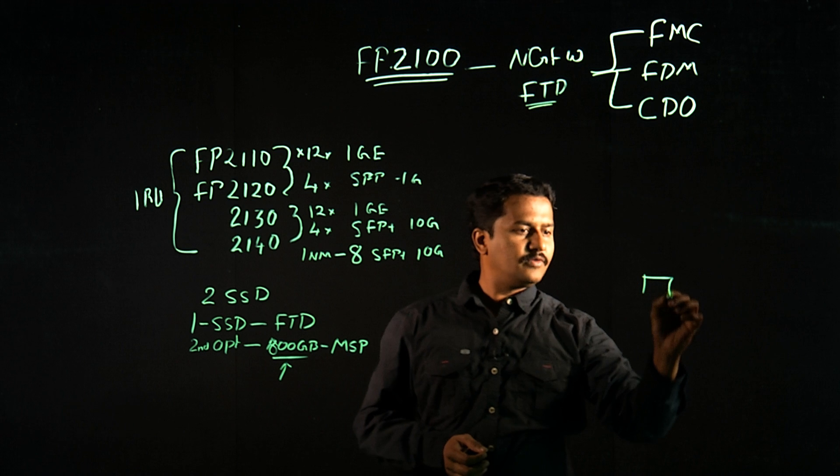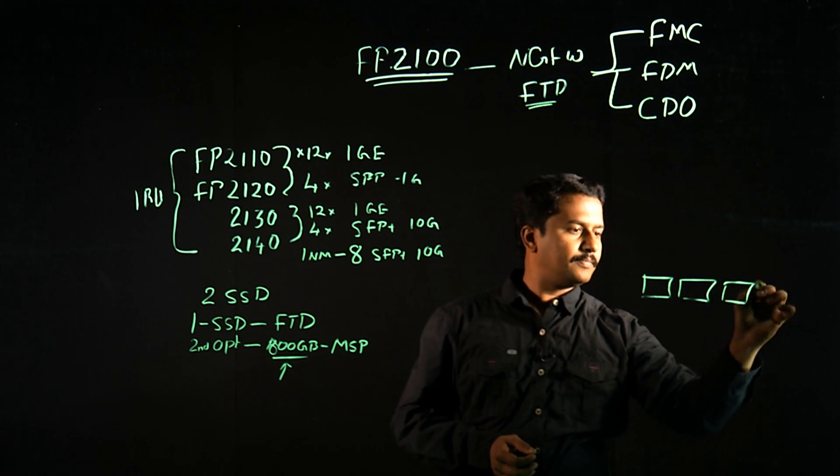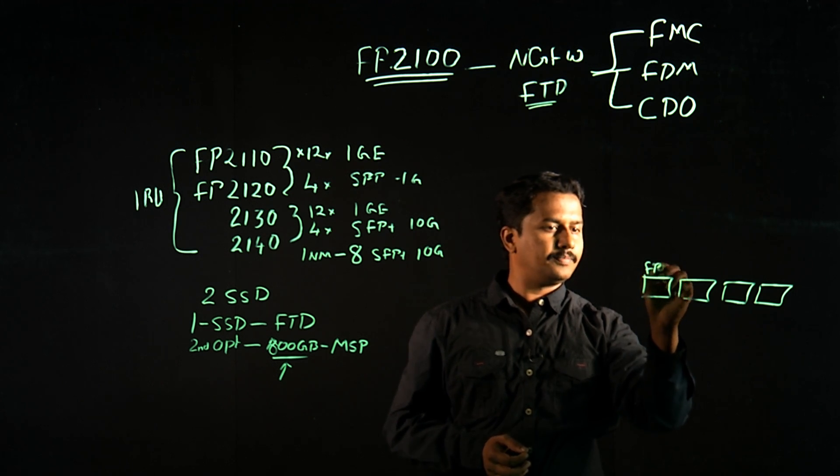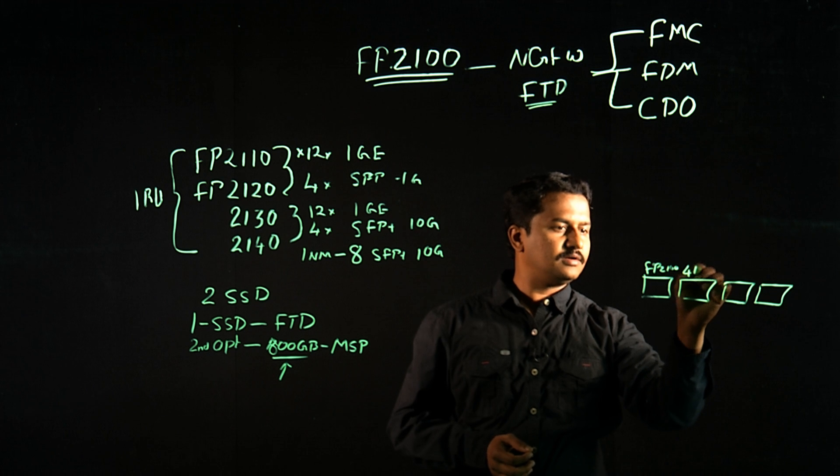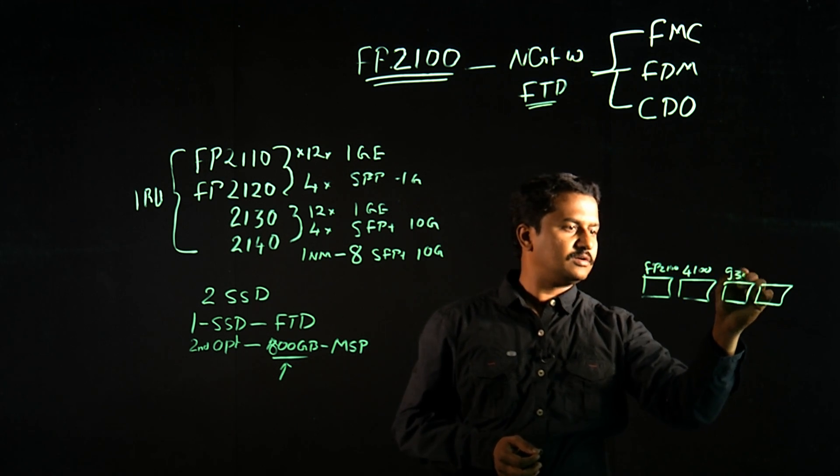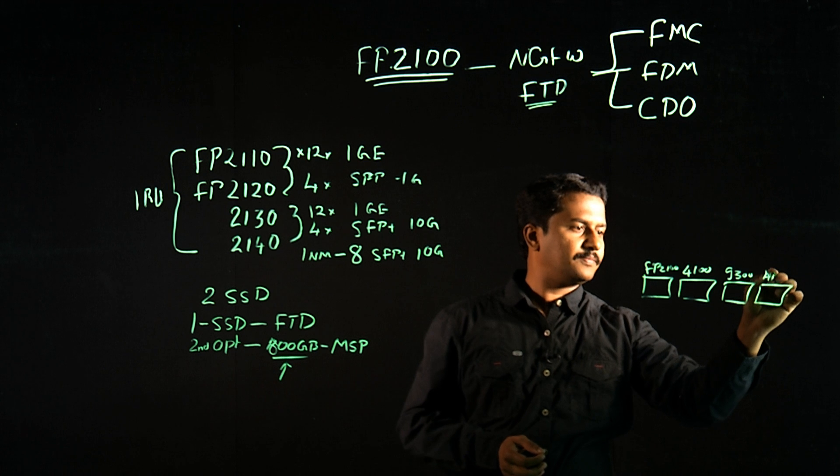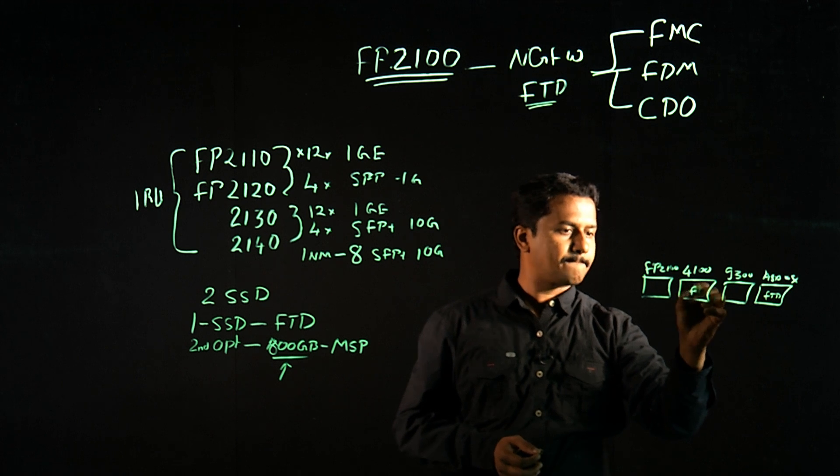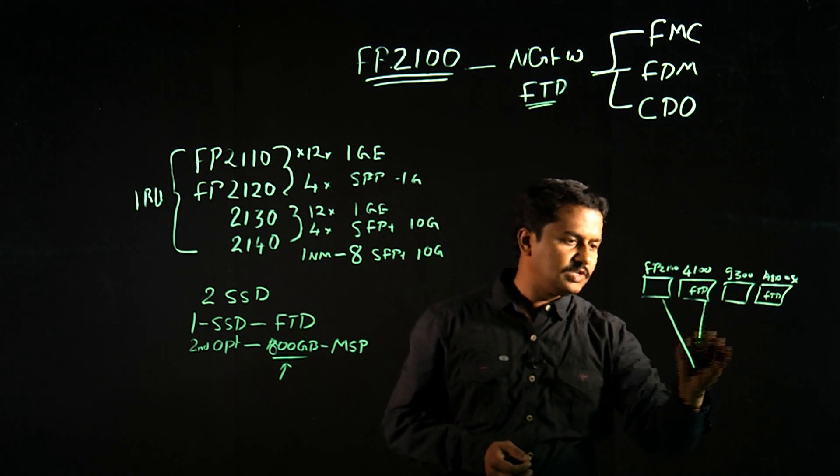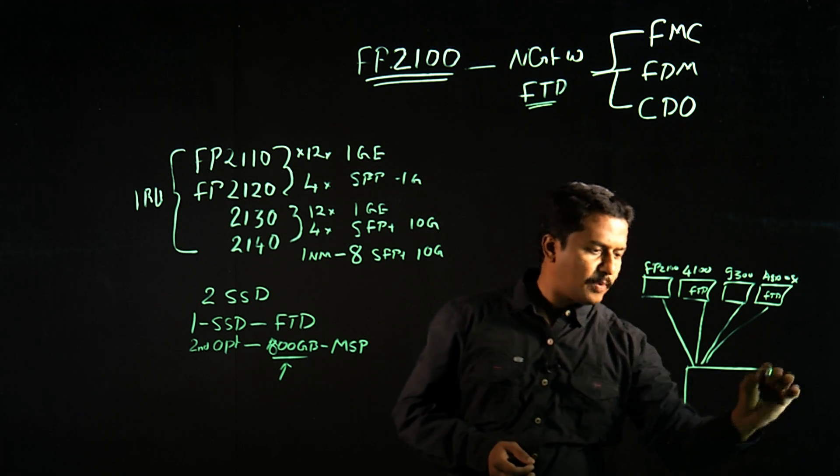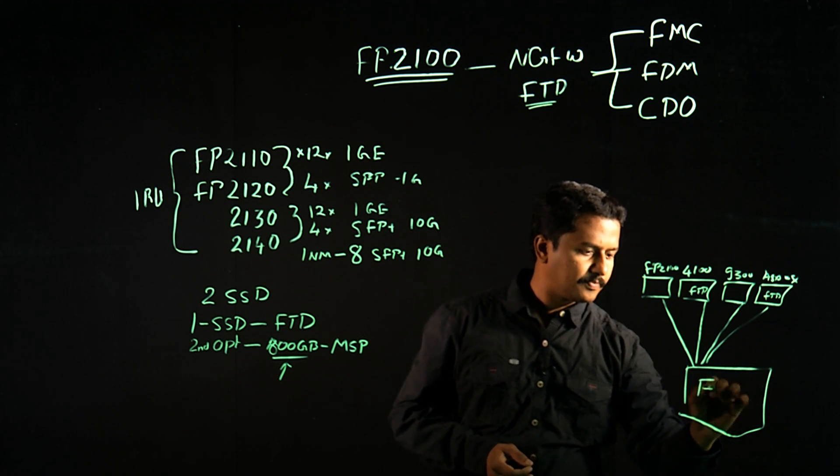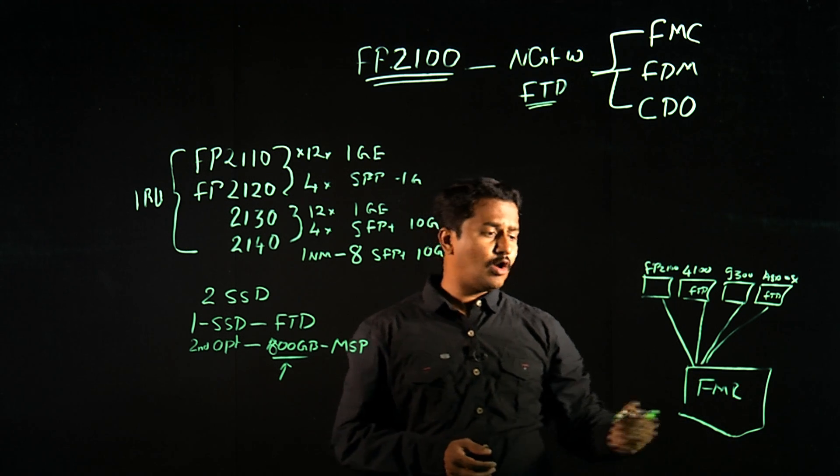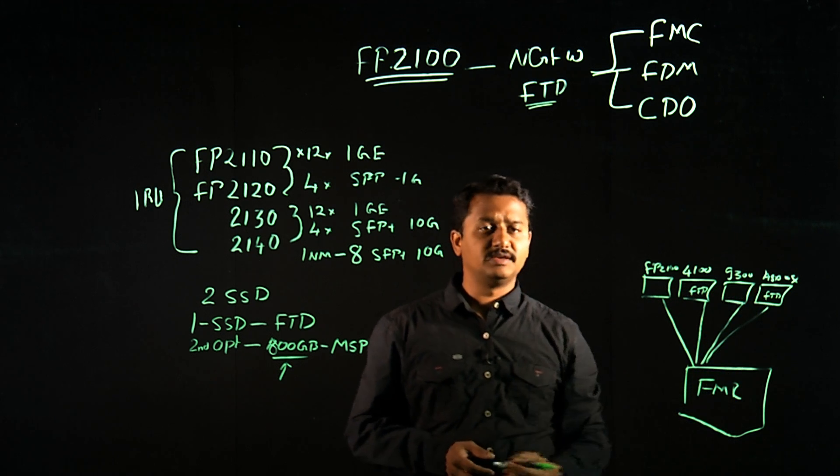When you have multiple devices on your network, it could be your Firepower 2100 or 4100 or 9300 or your ASA with ASA-X series with FTD running. If you want to manage all these devices centrally, you can use Firepower Management Center. Apart from managing all the configuration, it can also receive logs from all the devices and correlate with these events.